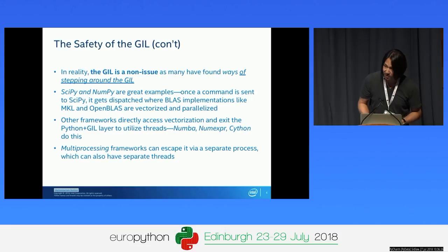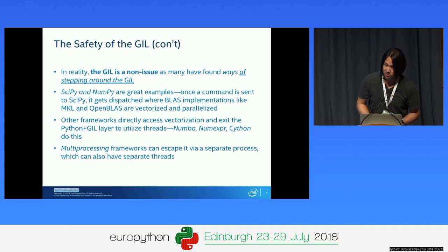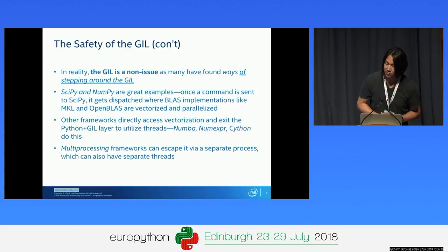NumPy and SciPy do an amazing job of cleanly stepping around the GIL by understanding the data flow. There are also many other frameworks that utilize this type of vectorization—Numba, NumExpression, and Cython all do this vectorization work for you while allowing you to stay within the Python layer.